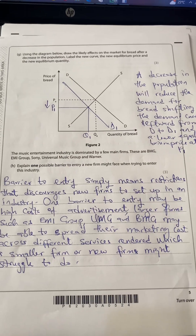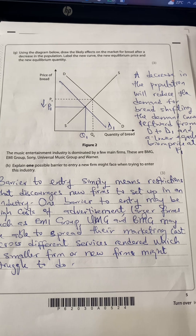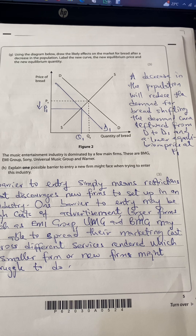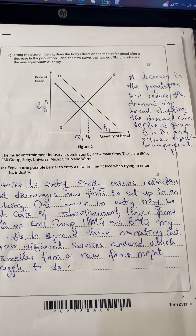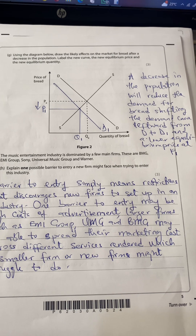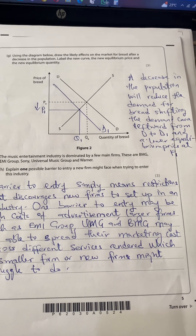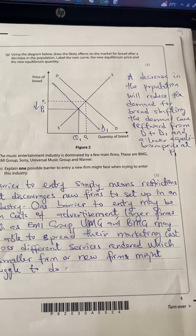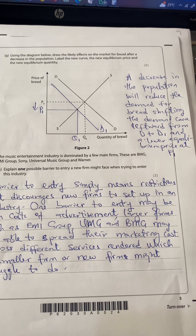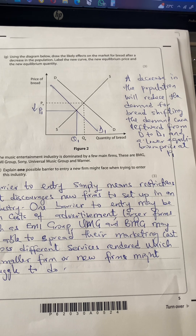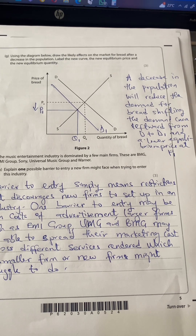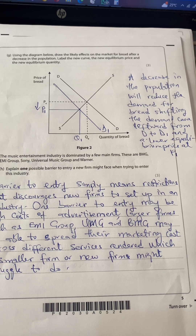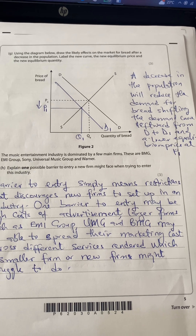Question G: using the diagram below, draw the likely effects on the market for bread after a decrease in population, labelling the new curve, new equilibrium price, and new equilibrium quantity. A decrease in population will reduce the quantity demanded for bread, shifting the demand curve leftward from D to D1. As a result, there will be a lower equilibrium price at P1 and equilibrium quantity reduces from QE to Q1.